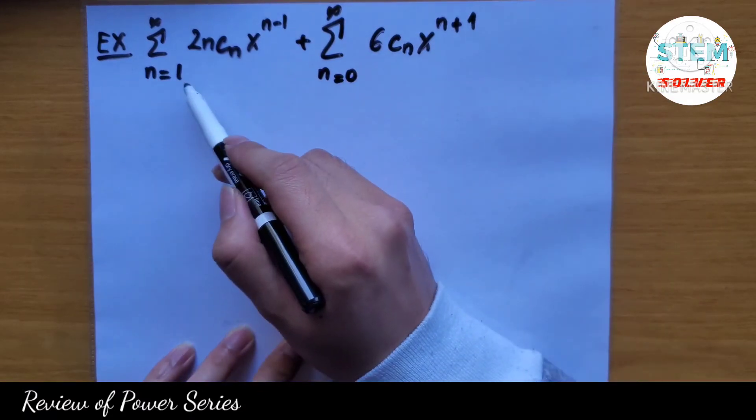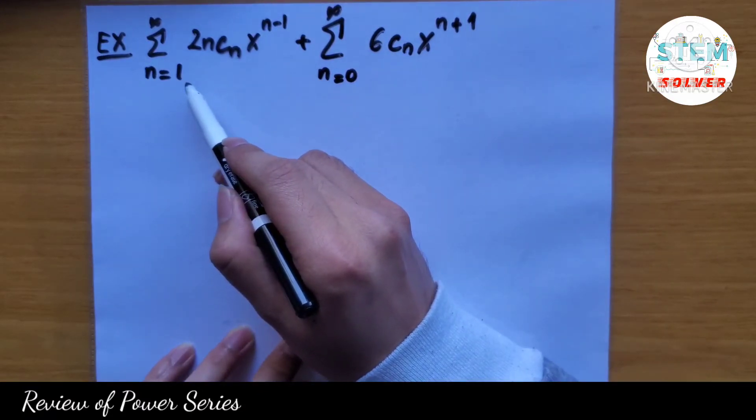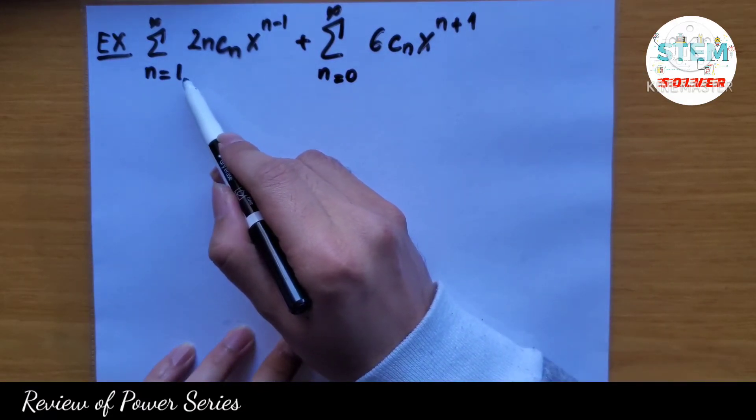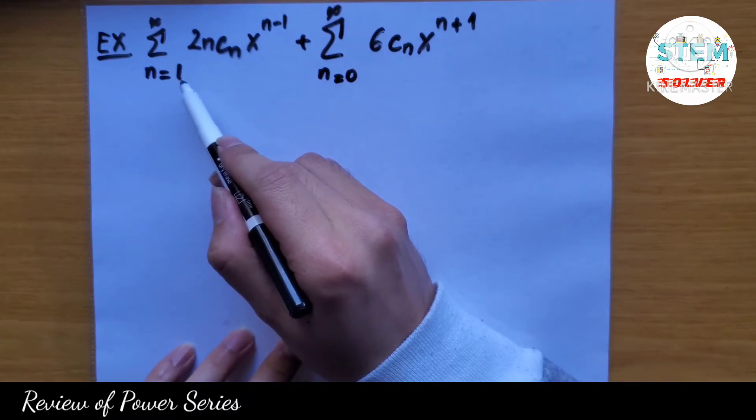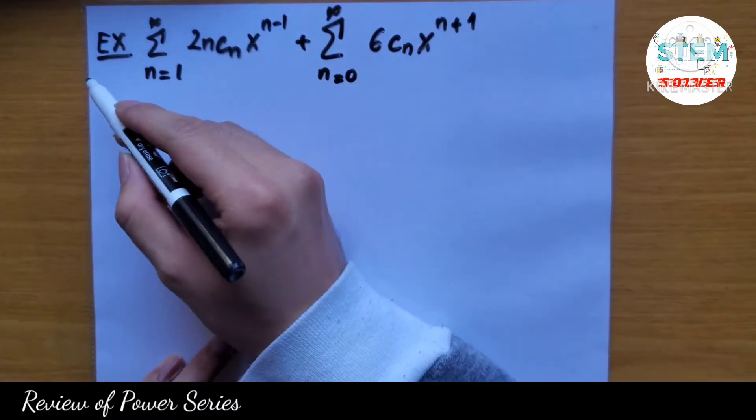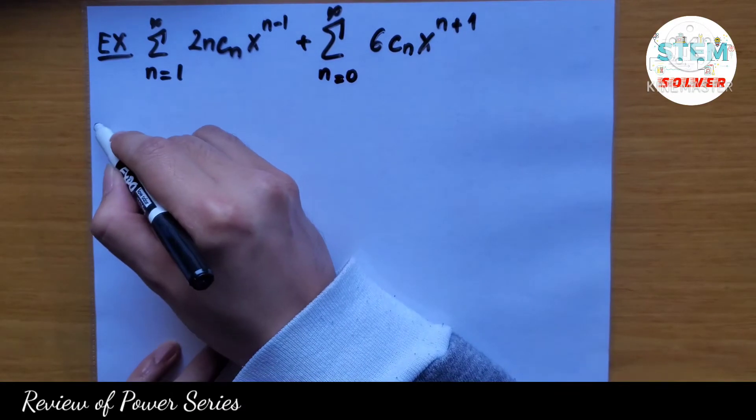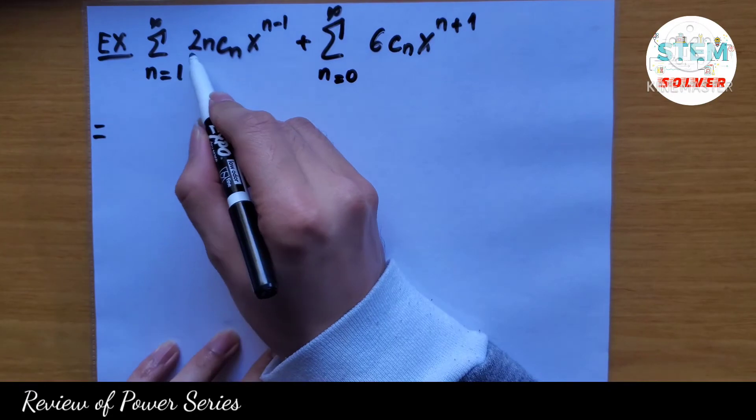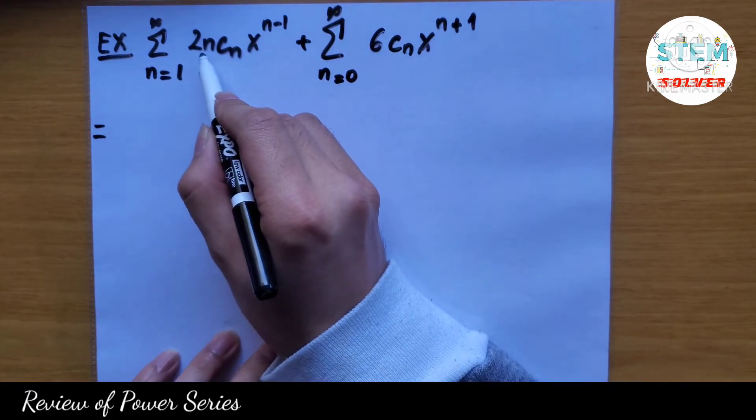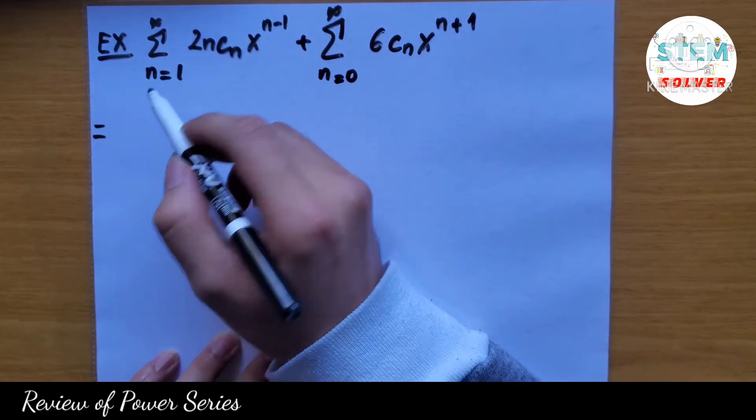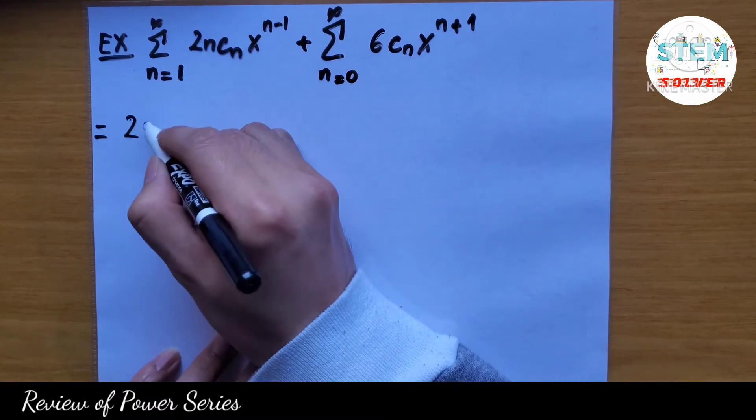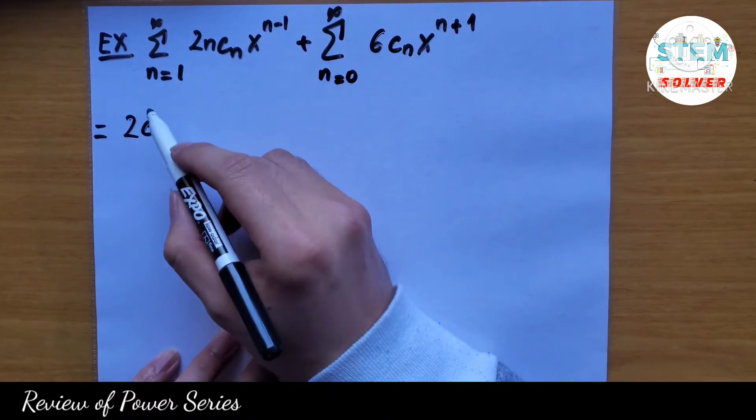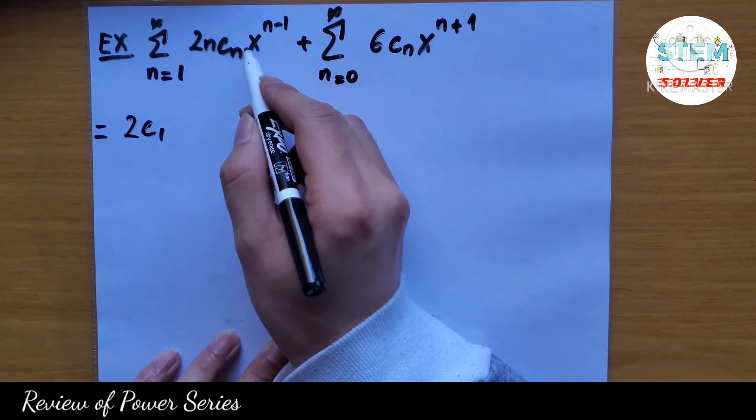And then you're going to pull out one term for this one, and we're going to pull out one term for this one, so this becomes: when I plug in 1, I'll get 2 times 1, c1, x to the 0, which is 1.